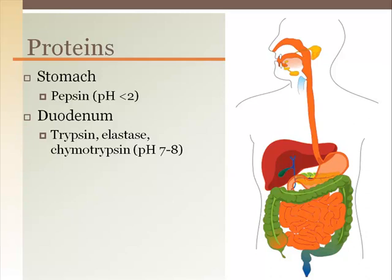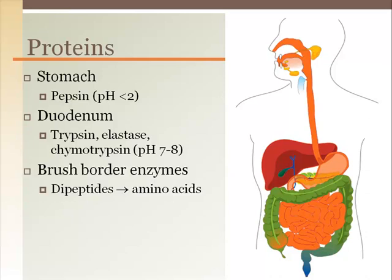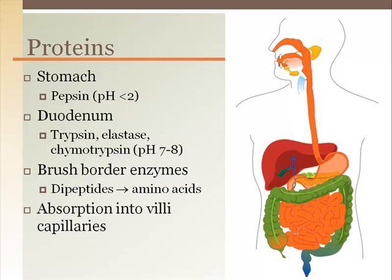The pancreatic trypsin, elastase, and chymotrypsin function well in a neutral to alkaline environment. Brush border enzymes along the edges of the villi do the final cleaving of dipeptides to individual amino acids, which are absorbed across the simple columnar epithelial tissue lining the villi to enter the capillaries inside, which then feed into the hepatic portal system for filtering by the liver.